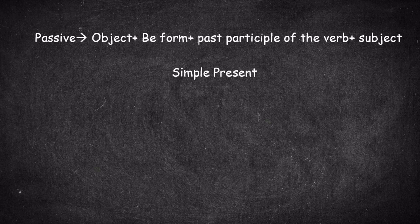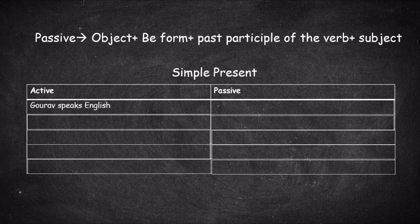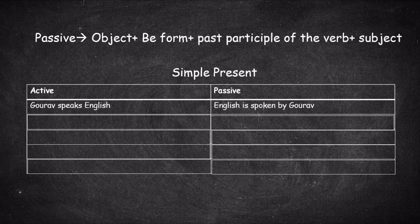Now let's look at passive voice construction according to tense forms. We will be looking at five different kinds. The first is simple present. For example: 'Gaurav speaks English.' In simple present, you use the base form of the verb, and for third person singular you add 'S.' To convert to passive, the object comes first, then the be form, then the past participle: 'English is spoken by Gaurav.' 'Is' is added before the past participle form to convert it into passive.